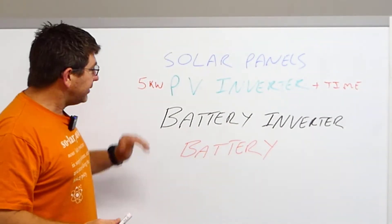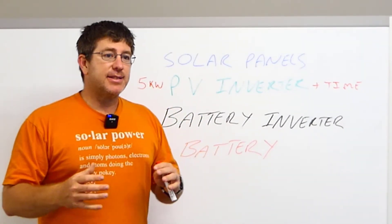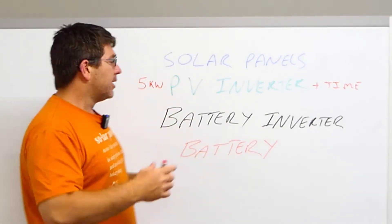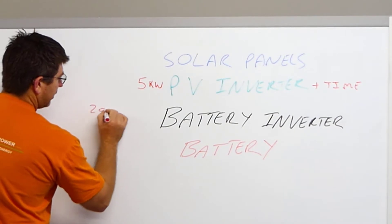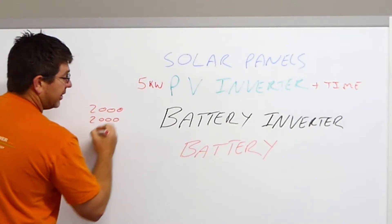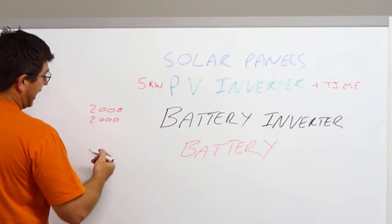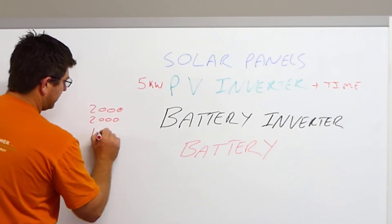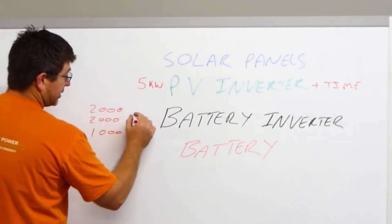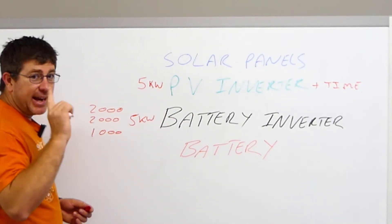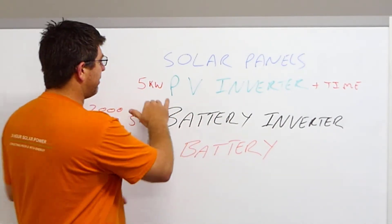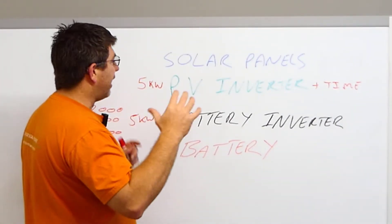A 5 kilowatt battery inverter means that's how many appliances you can run totalling 5,000 watts at once. Using the kettle as an example: a 2,000 watt kettle, a 2,000 watt toaster, and a Thermomix — if you turn all three on at once, your battery inverter can supply 5 kilowatts at any one time. So these represent how fast it can do things — the kilowatt is the speed and how quickly it can do something.